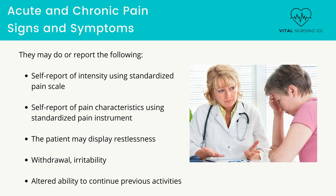How can you, the nurse, tell when a patient is experiencing acute and chronic pain? They may do the following: self-report of intensity using a standardized pain scale, self-report of pain characteristics using a standardized pain instrument. The patient may display restlessness, withdrawal, irritability, and altered ability to continue previous activities.